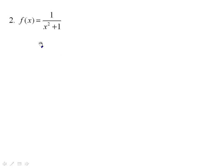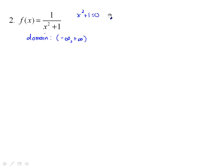Let's look at another one. f(x) is equal to 1 over x squared plus 1. Same procedure. The domain is going to be all real numbers. Be careful with this one. If you set x squared plus 1 equal to 0, the denominator gives x squared equal to negative 1, which is impossible. So you can substitute any number for x. There will be no restriction on it.